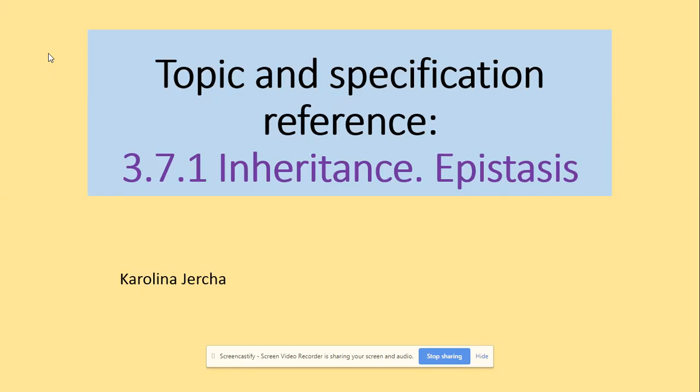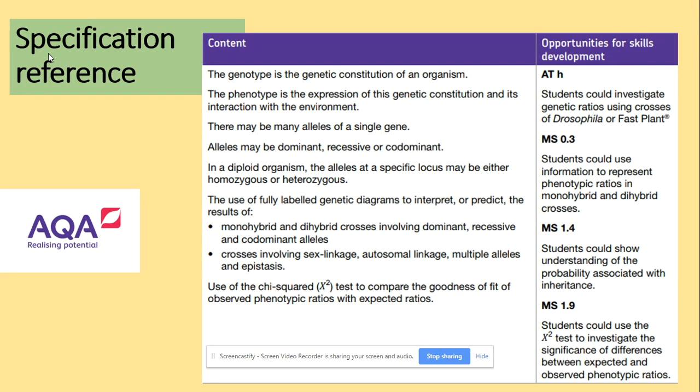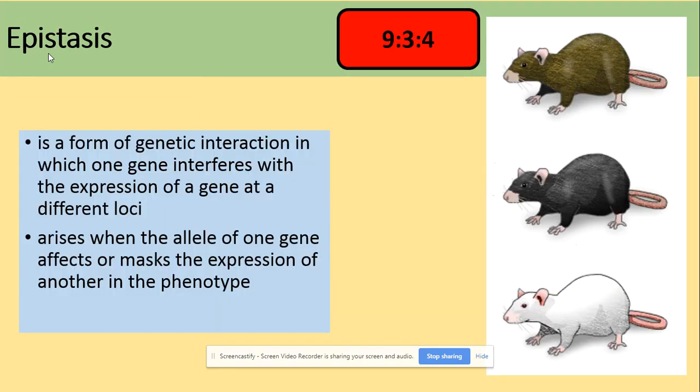Hi guys, welcome to Epistasis. This is our last video on the genetic process. If you missed the previous ones, make sure you find them. Epistasis is a form of genetic interaction in which one gene interferes with the expression of a gene at a different location. This arises when the allele of one gene affects or masks the expression of another in the phenotype.